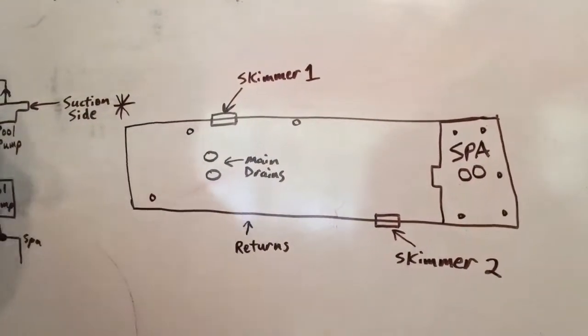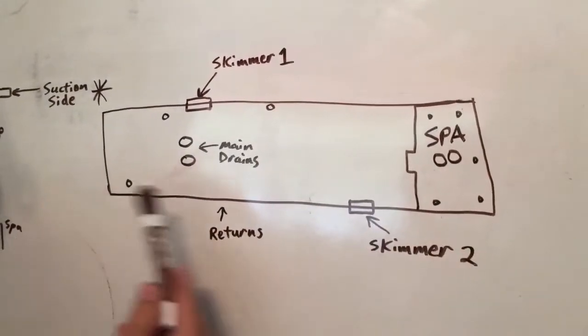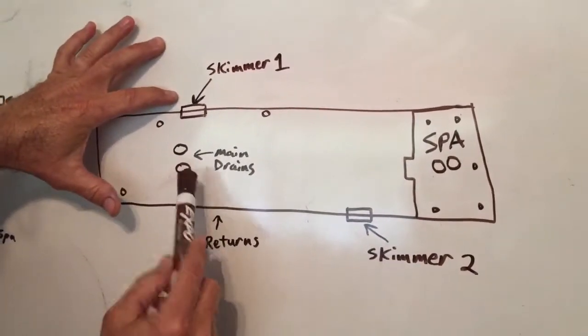So here's the normal pool. We have an attached spa, and then what you're going to have are skimmers and then main drains.